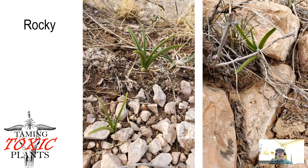The second kind of area are places that are very rocky. Sometimes the rocks are very large, as you can see on the right, but sometimes it's more gravelly types of soils. Regardless, the death camas will often grow right out between rocks, so it can occur in very rocky soils.